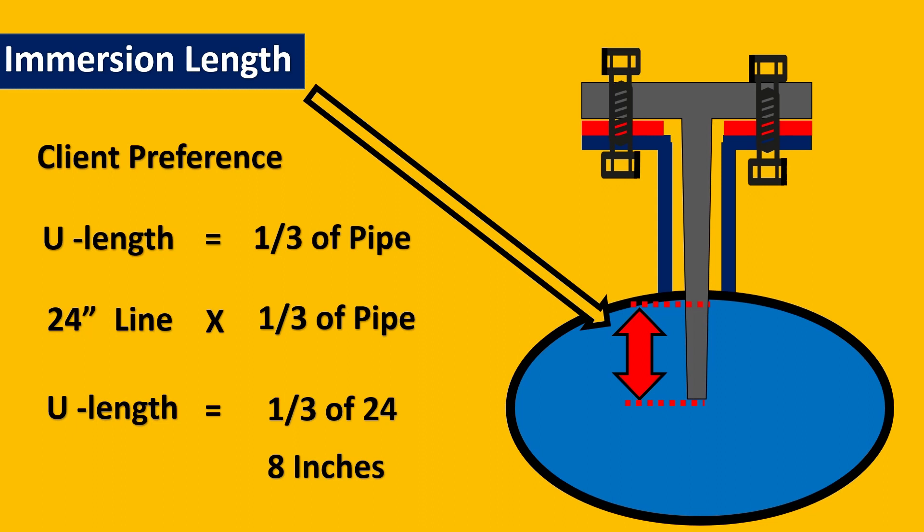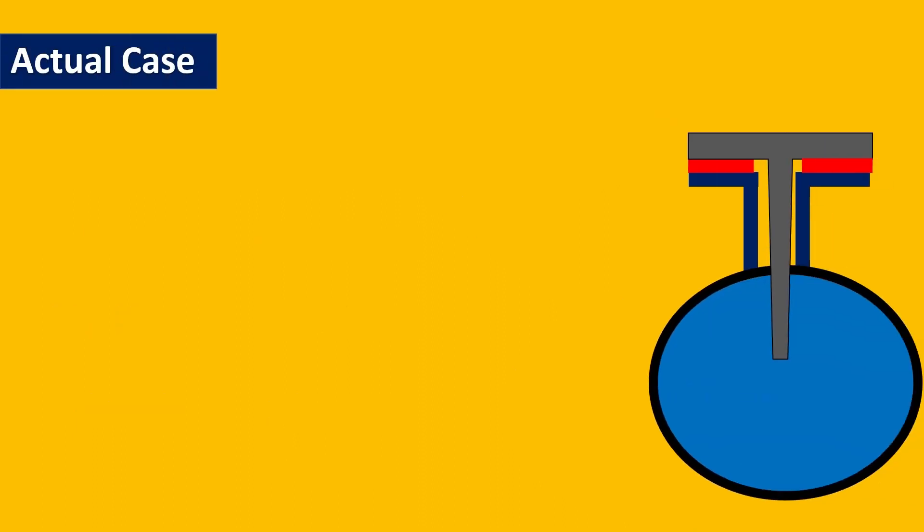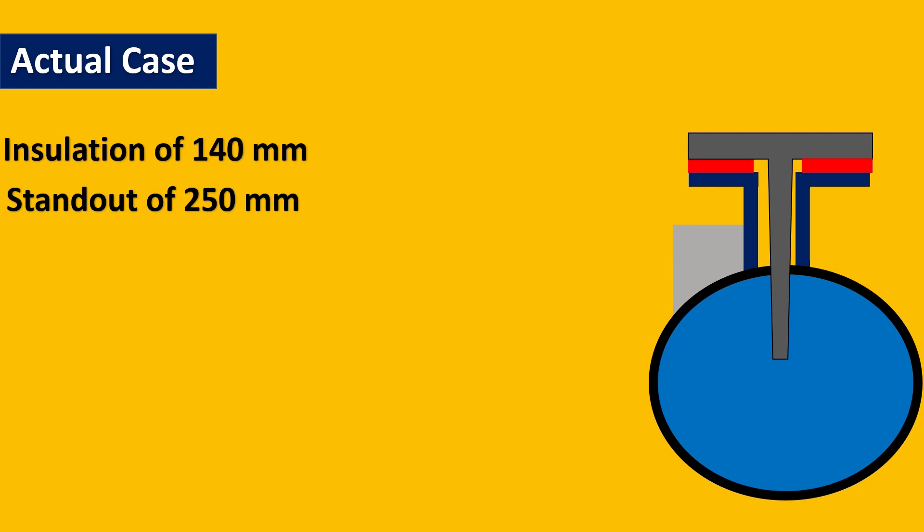Finally, let us try to actually calculate and see the case. So for example, for an actual case, here is my thermowell assembly put together. My insulation is 140 mm. So my standout I have kept as 250 mm. Why? Because I would want a clearance of around 100 mm. So going to the next standard number from 200 is 250 mm. So my standout is 250 mm. Now what I need to do is after I have got a clearance of 100 mm, what will be my immersion length?